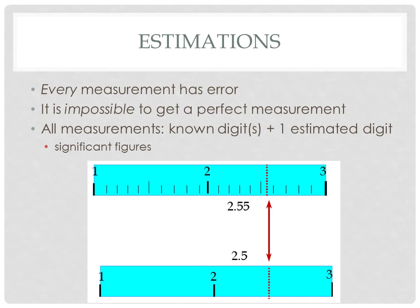Here is an example of what we mean by known and estimated digits. Let's say we're using this measuring device here at the bottom, and we can see it's marked one, two, three. Let's say these are centimeters. We're trying to measure the length of something, and that something ends right here between two and three. We know for sure that the length of this object is two point something.